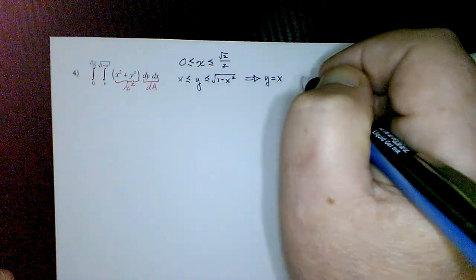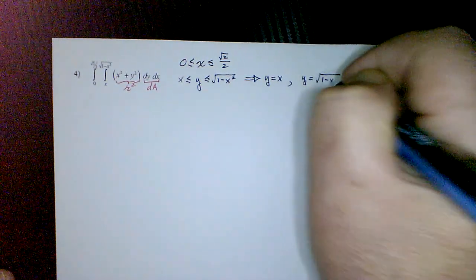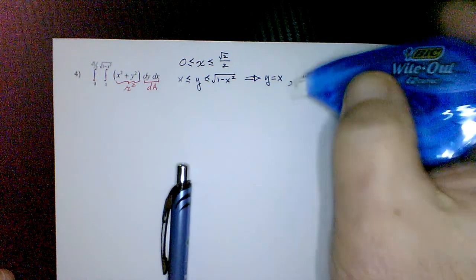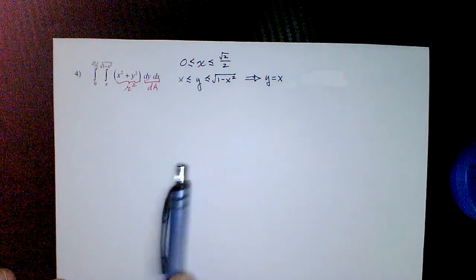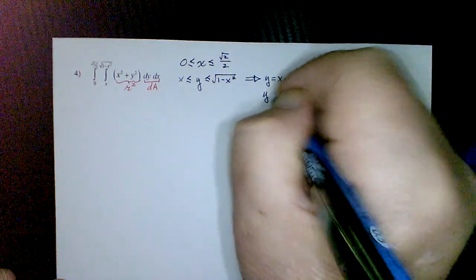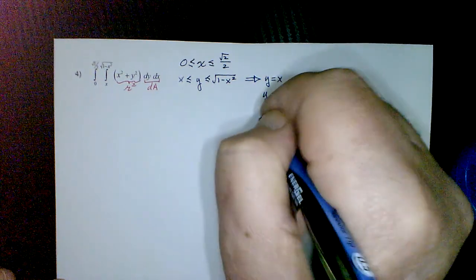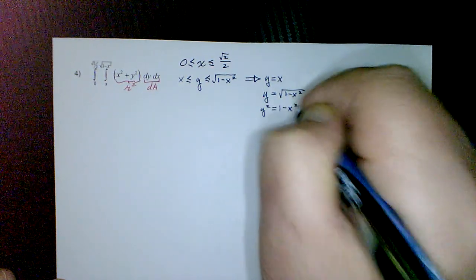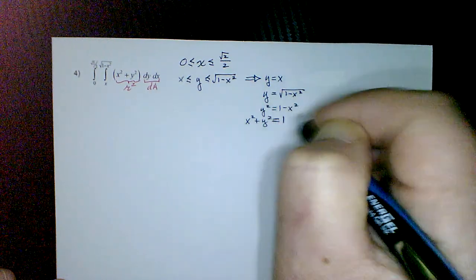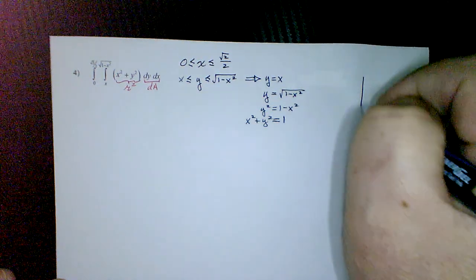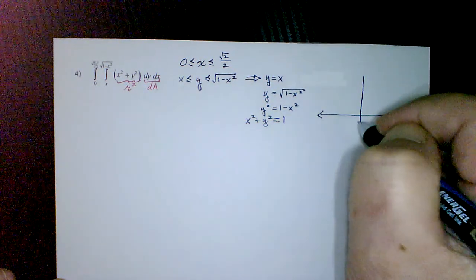We identify the boundaries: y = x is one curve, and y = √(1 − x²) is the other. Squaring both sides of the second equation gives x² + y² = 1, which is a circle centered at the origin with radius 1. We'll put these into polar coordinates.